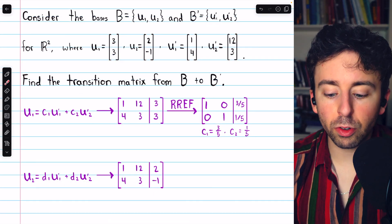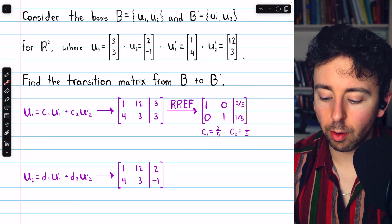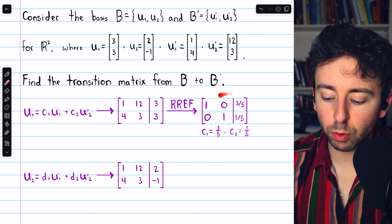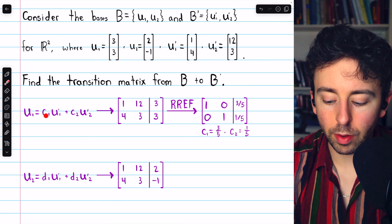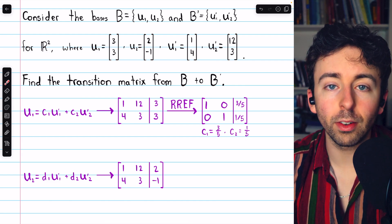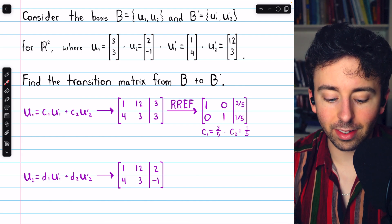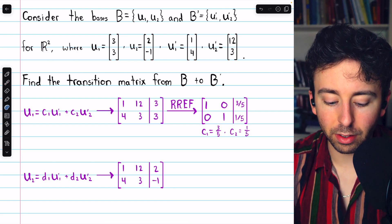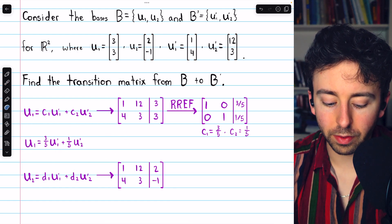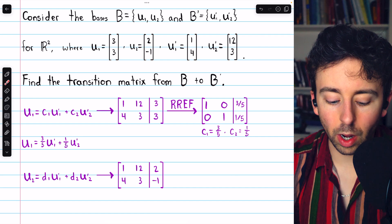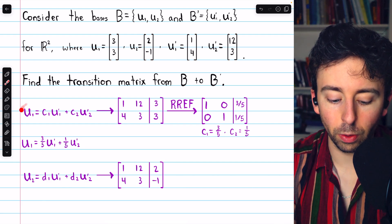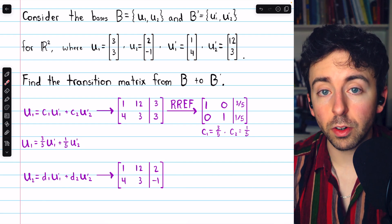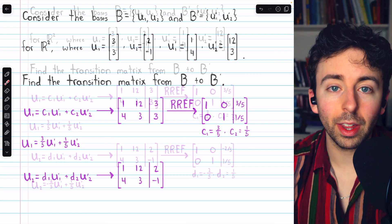We then perform Gauss-Jordan elimination on this augmented matrix, and you can verify that we arrive at this reduced row echelon form, which tells us C1 is three-fifths and C2 is one-fifth. So this tells us exactly how we can express basis vector U1 in terms of the new basis vectors: U1 equals three-fifths U1' plus one-fifth U2'. So the coordinates of this old basis vector in terms of the new basis are three-fifths and one-fifth.